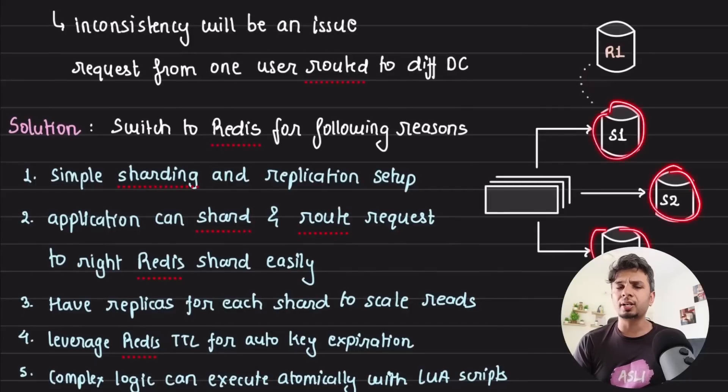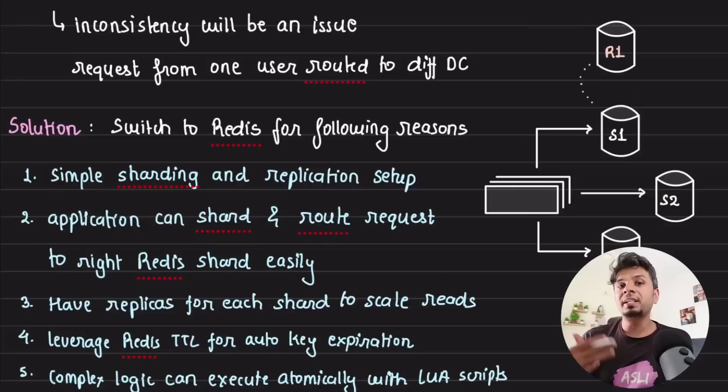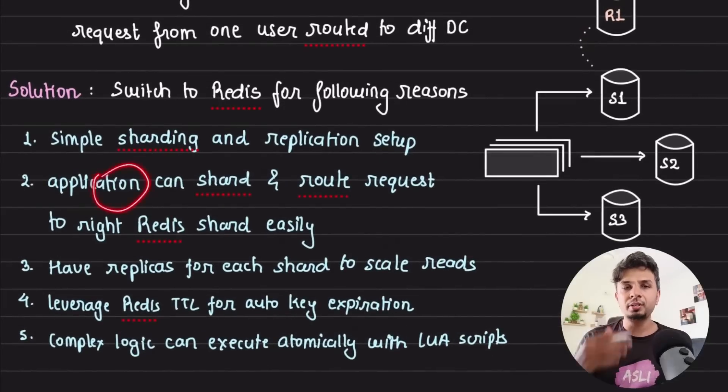When you are typically sharding your Redis across multiple data nodes, as per their architecture, they are letting their API servers decide to which Redis node should it connect to for a particular rate limiting key. Let's say if I'm rate limiting by user ID, then my rate limiting key becomes user ID, and I would know using any algorithm—hash-based routing, consistent hashing, pick your favorite—to which Redis node should I connect to, present in which data center and whatnot. So they are preferring an application-level sharding to determine which Redis node to connect to.